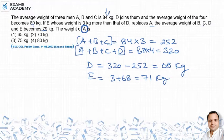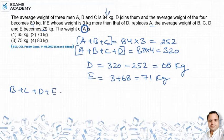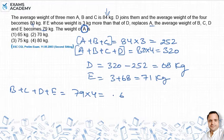आगे question में क्या कहता है कि B, C, D और E का average weight वो है 79. इसका मतलब B, C, D और E का जो total weight हो जाएगा वो कितना होगा? 79 into 4 that is equal to 316.